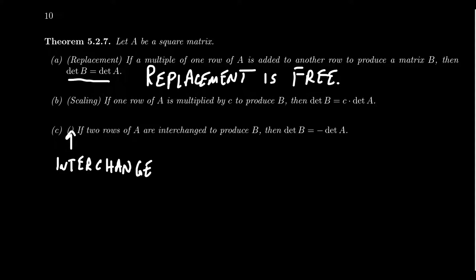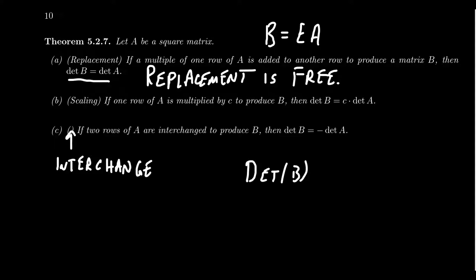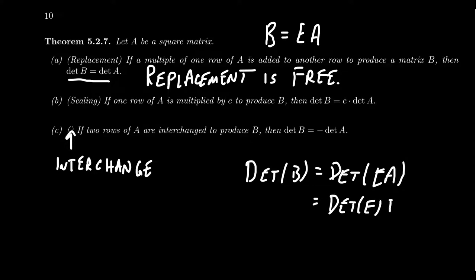It doesn't cost anything to do a replacement in terms of determinant calculations. The basic reason is: if you transformed A to B by doing a row operation — if a multiple of one row of A is added to another row to produce matrix B — then B equals E times A, where E is the elementary matrix associated to this replacement operation. Taking the determinant of B gives us det(E) times det(A).